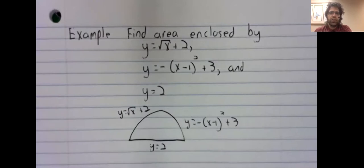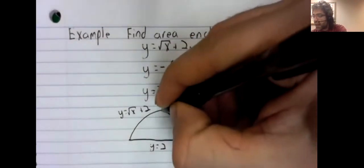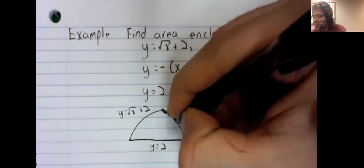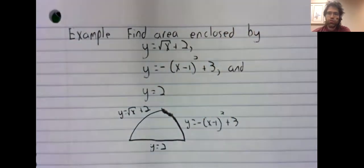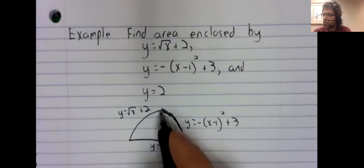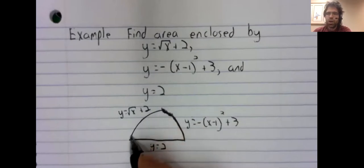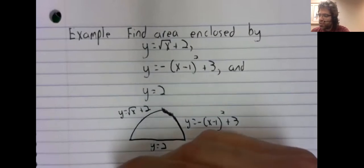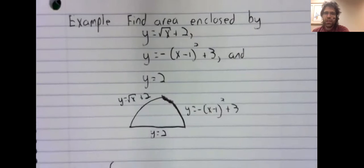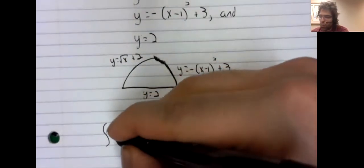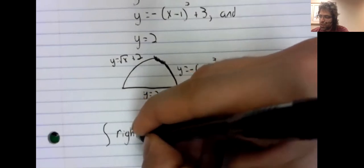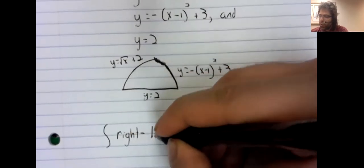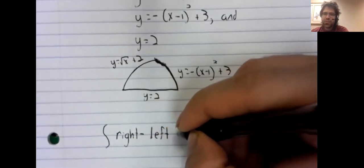On the other hand, to use horizontal rectangles, we need a right function and a left function. And those we have, this quadratic is always on the right. This square root is always on the left. So we can set up an integral, a single integral of the form right minus left.